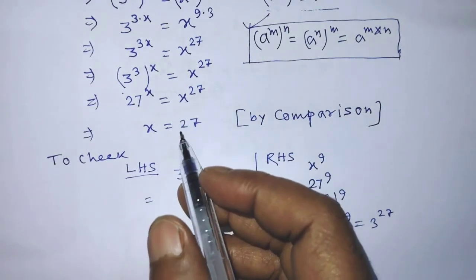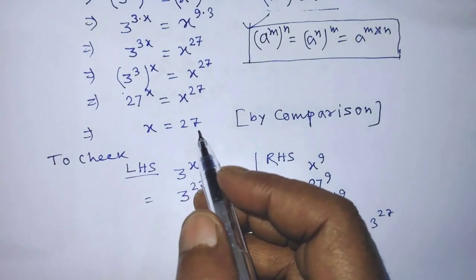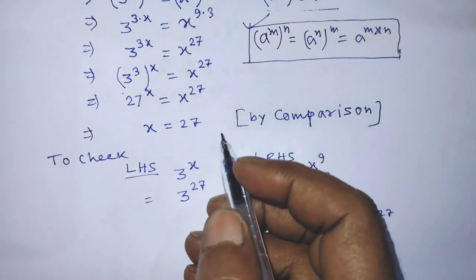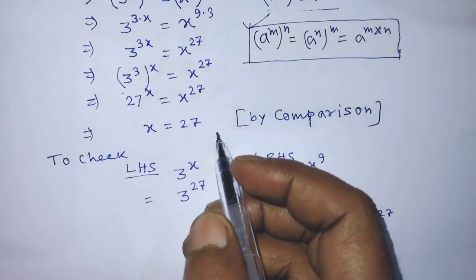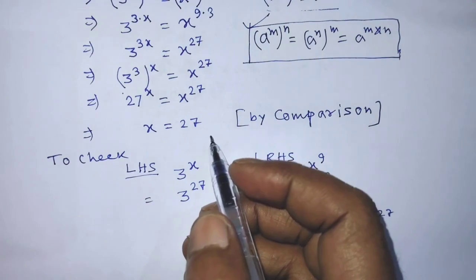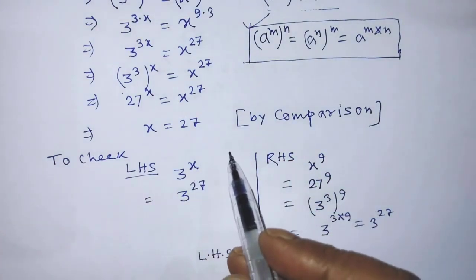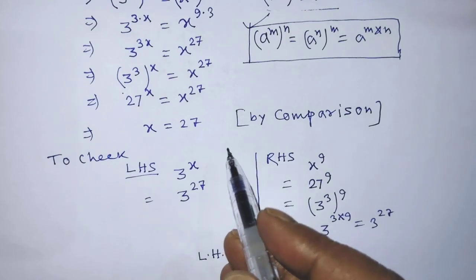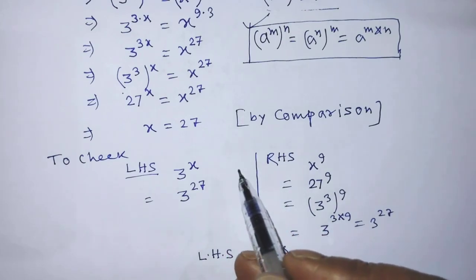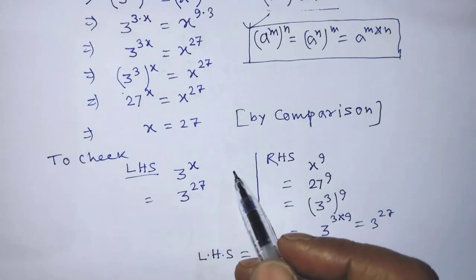So we can say that x equal to 27 is the correct solution of the given equation. Our answer is complete. If you like this video and this trick, please support me and subscribe to my channel. Thank you. Bye-bye.